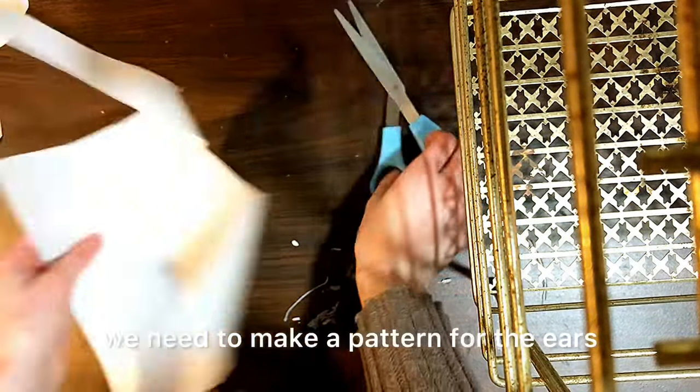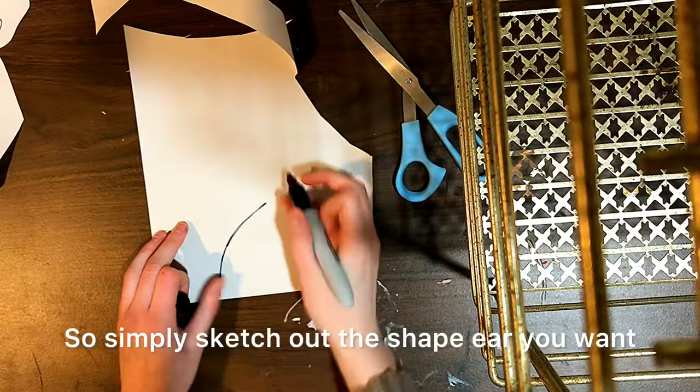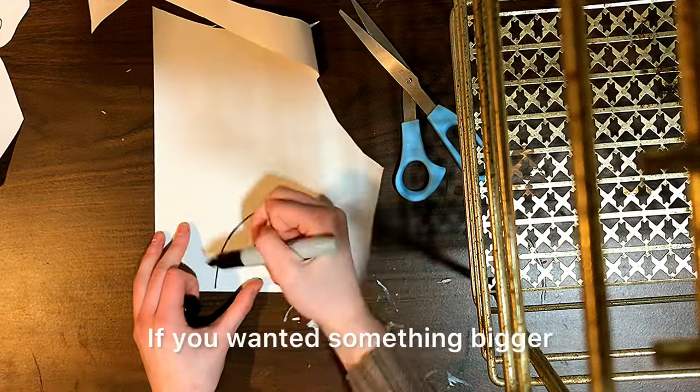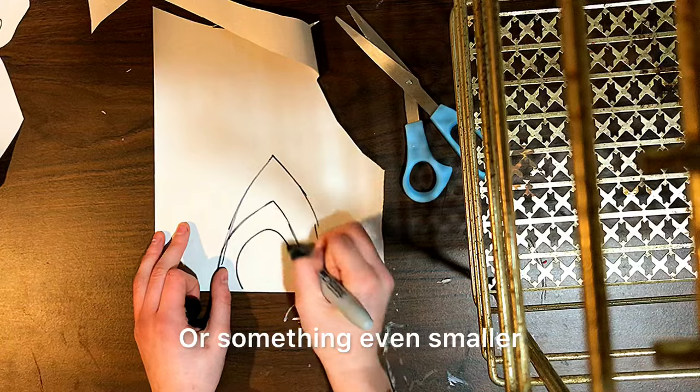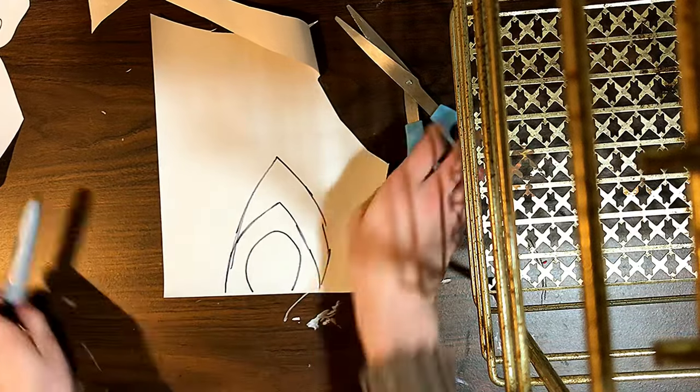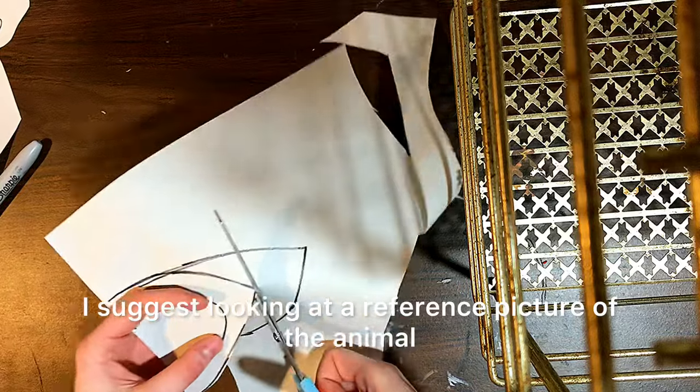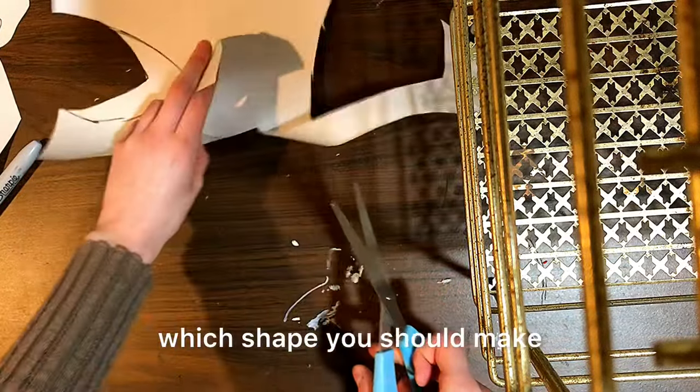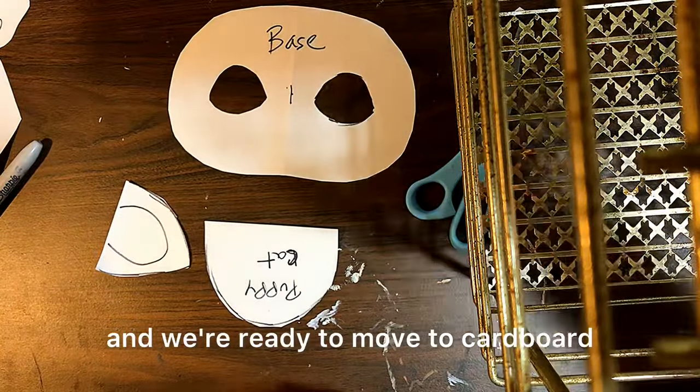Lastly, we need to make a pattern for the ears. So simply sketch out the shape ear you want. Again, this would make a good cat ear. If you wanted something bigger, you could make it bigger. Or something even smaller, you could make it smaller. I suggest looking at a reference picture of the animal that you're creating. It will help you best figure out what shape you should make that pattern piece. We have all three of these pieces now, and we're ready to move to cardboard.